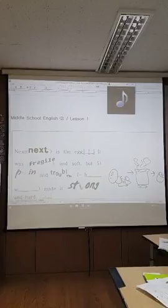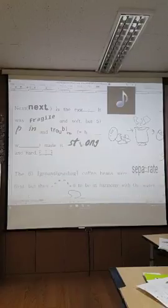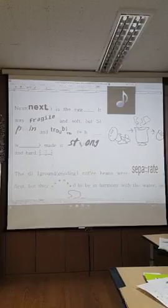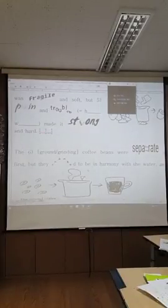Next is the egg. It was fragile and soft, but pain and trouble made it strong and hard. 그것은 연약하고 부드러웠지만, 소통과 어려움은 그것에 강하고 딱딱하게 만들었어.